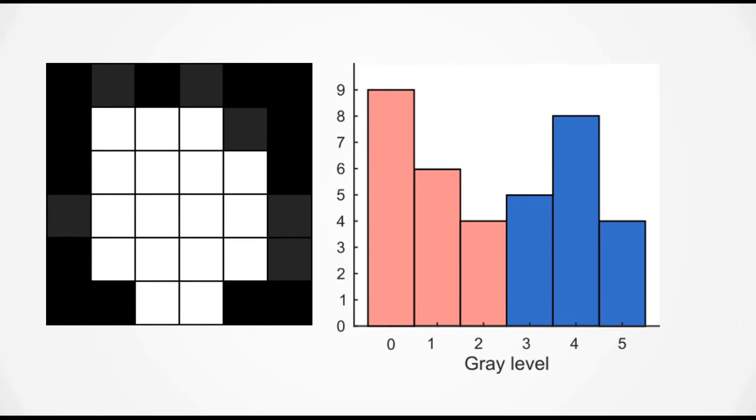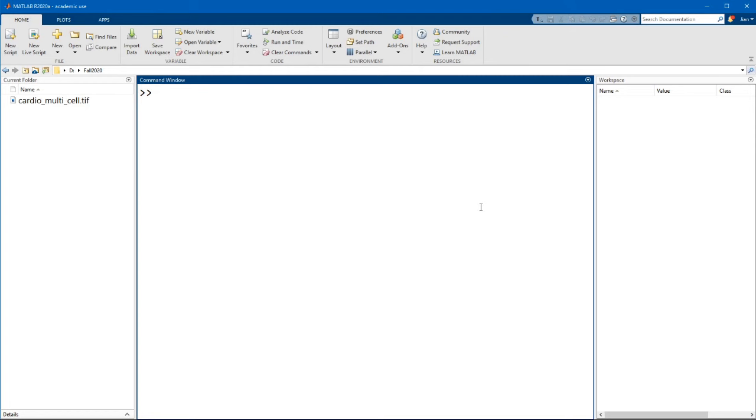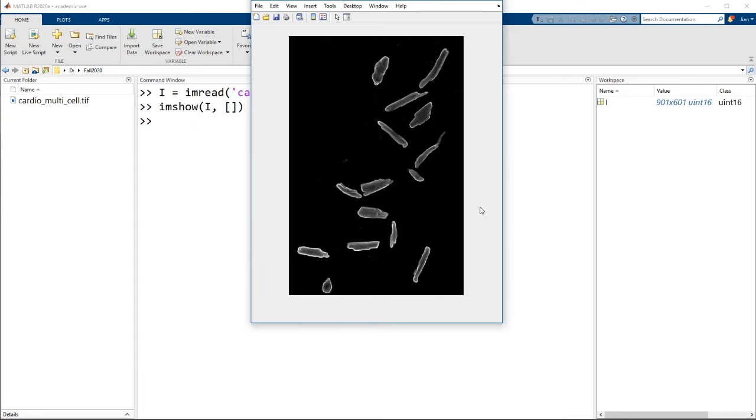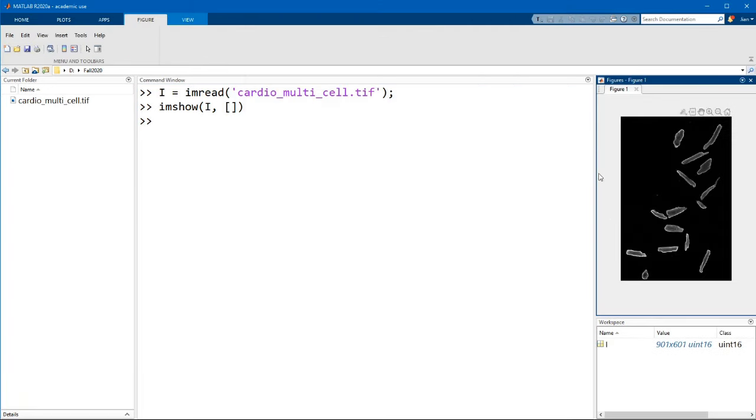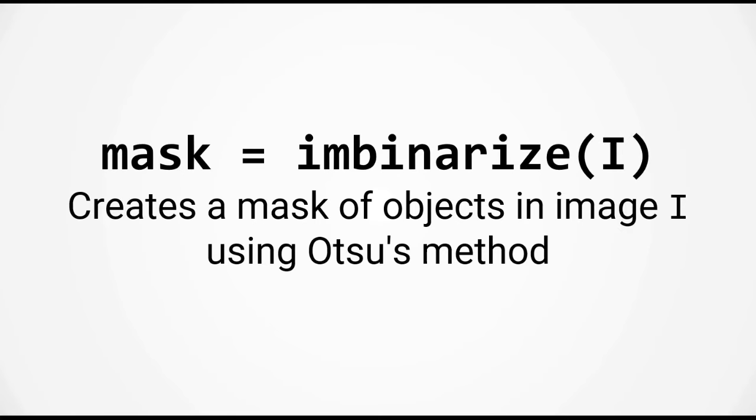Let's switch over to MATLAB and see how this function works. I'm going to use the same image from the previous video which is the image of cardiomyocyte cells. To run Otsu's method you will use the function imbinarize. The syntax is mask equals imbinarize(I), where I is the matrix containing your image data and this creates a mask of the objects in image I using Otsu's method.